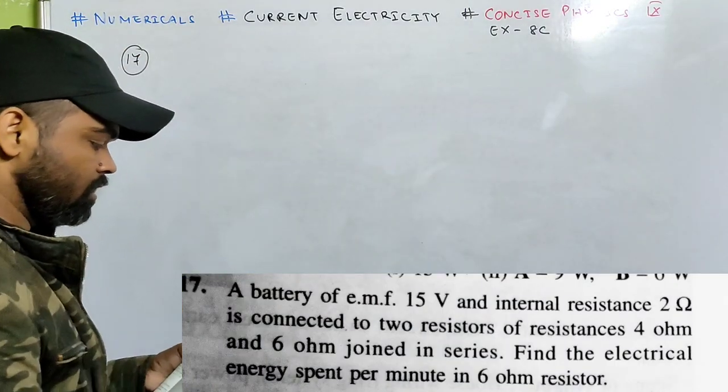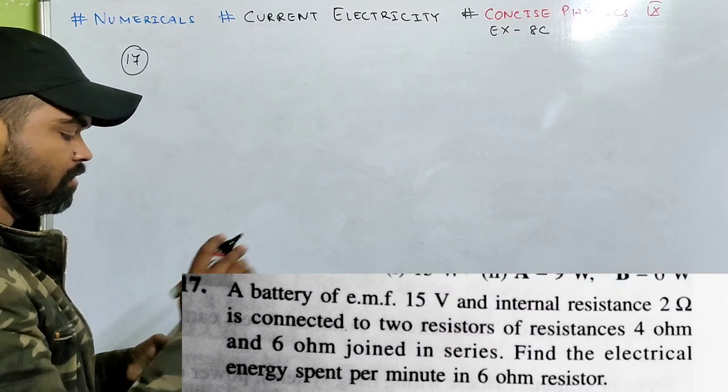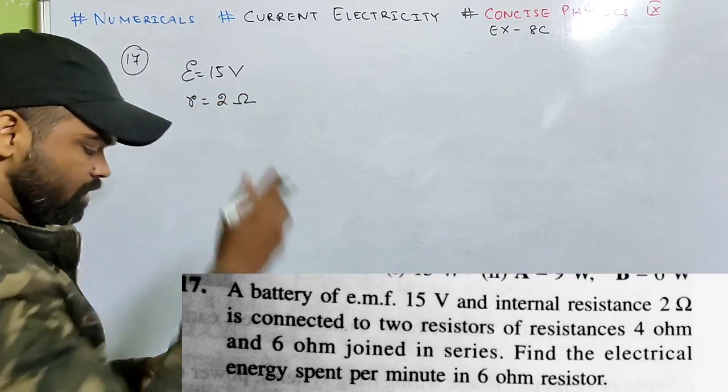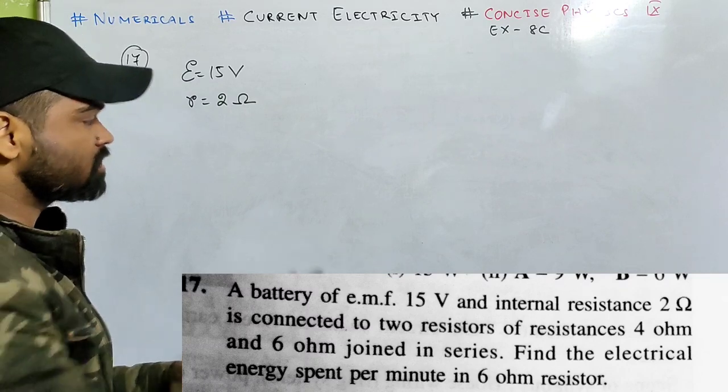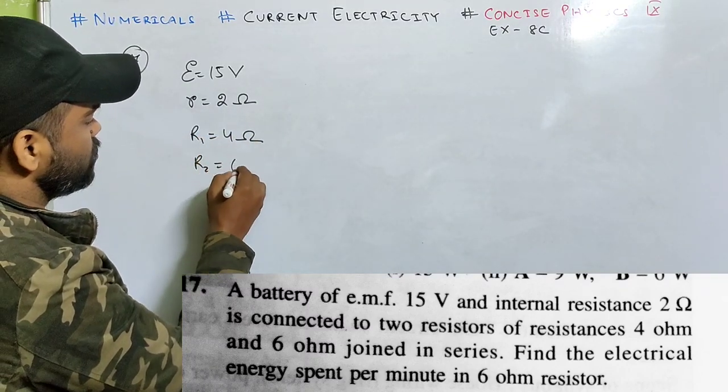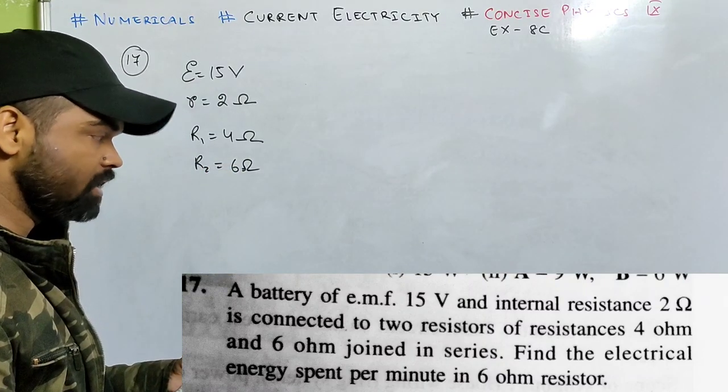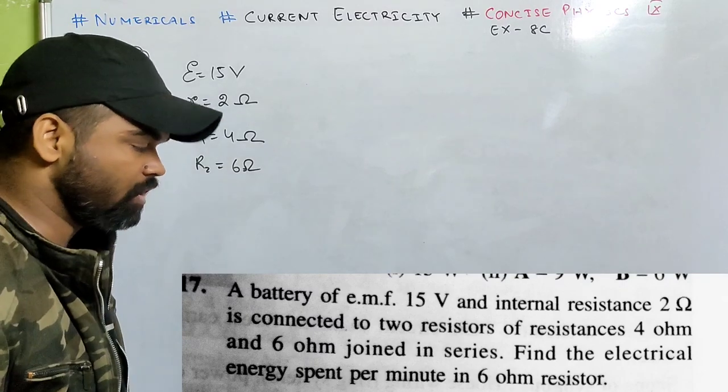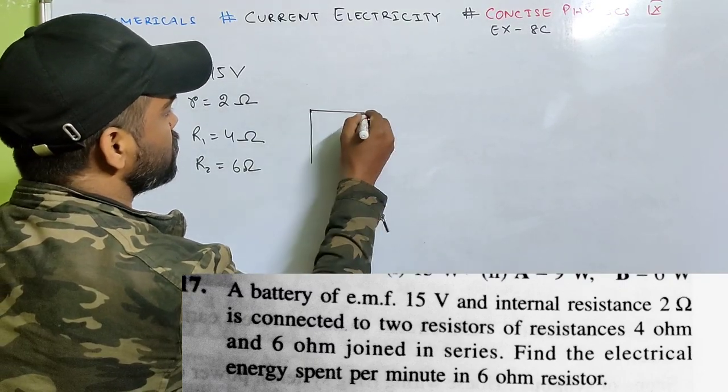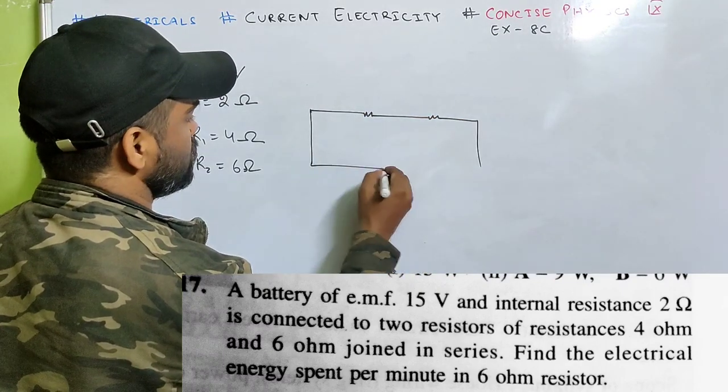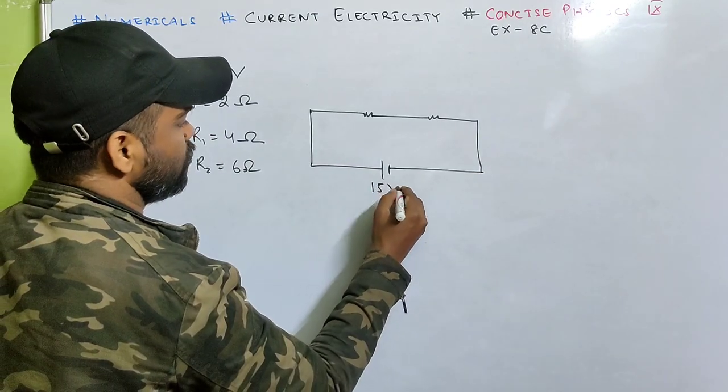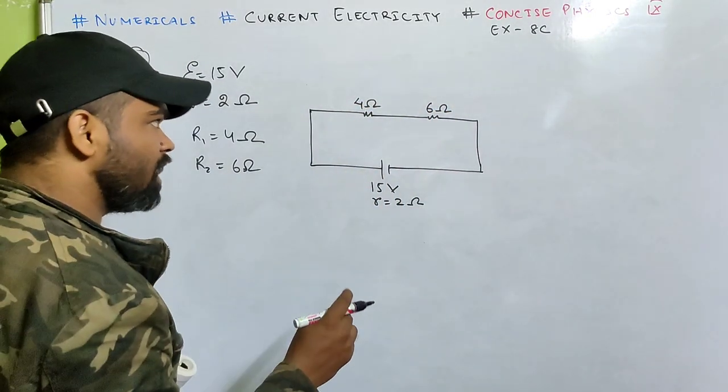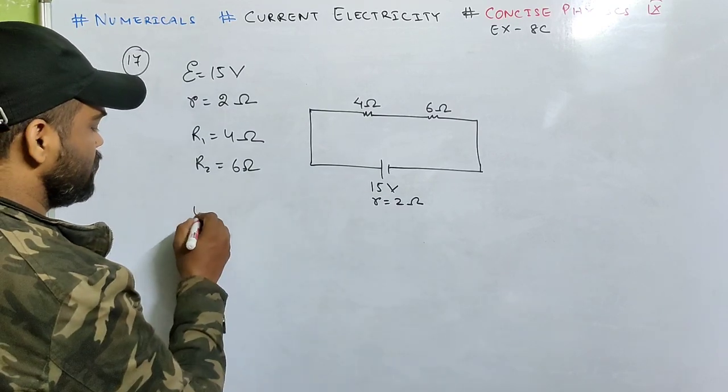Look at number 17. A battery of EMF 15 volt with internal resistance 2 ohm is connected to two resistors of resistance 4 ohm and 6 ohm joined in series. Find the electrical energy spent per minute in the 6 ohm resistor. First, I'll draw the diagram. Over here R1 and R2, EMF is 15 volt, internal resistance is 2 ohm, this is 4 ohm and this is 6 ohm.